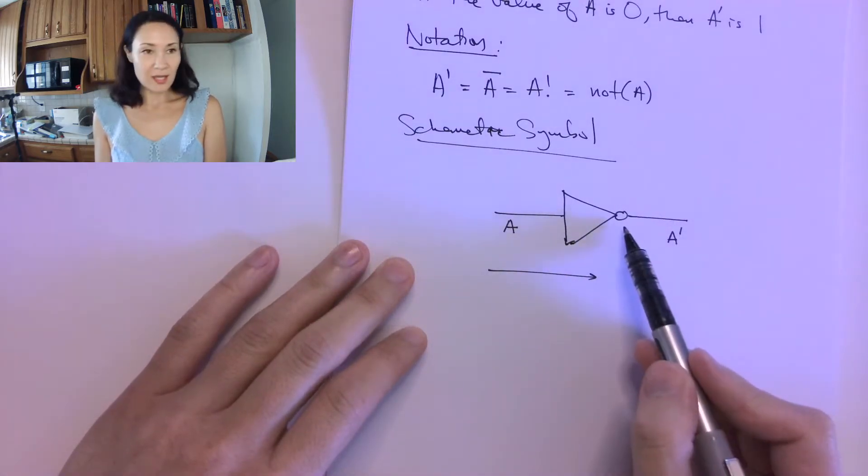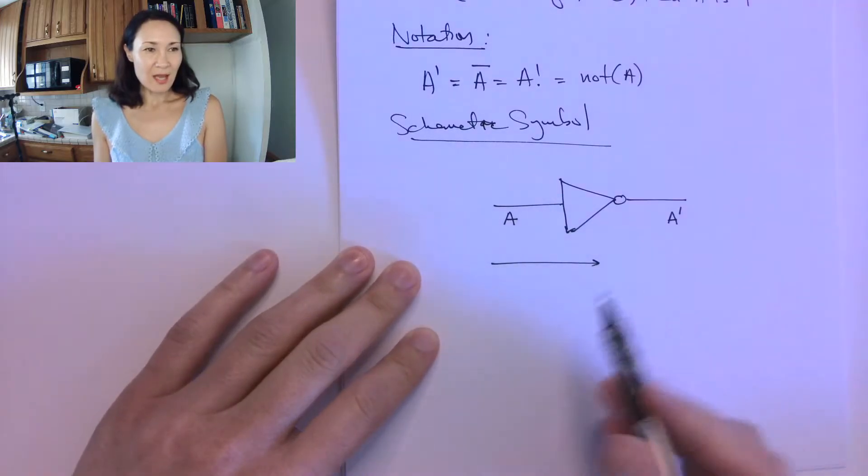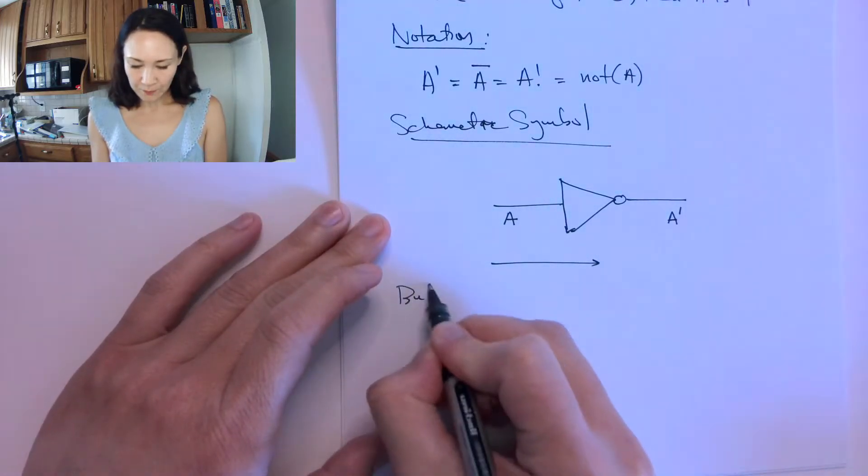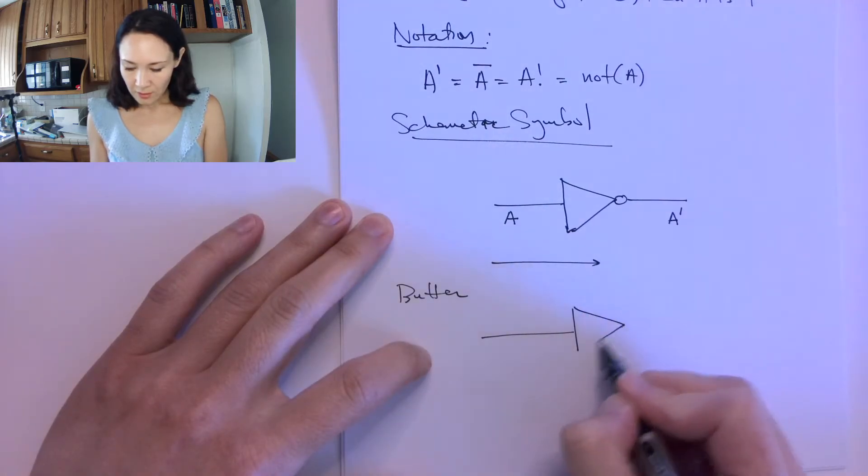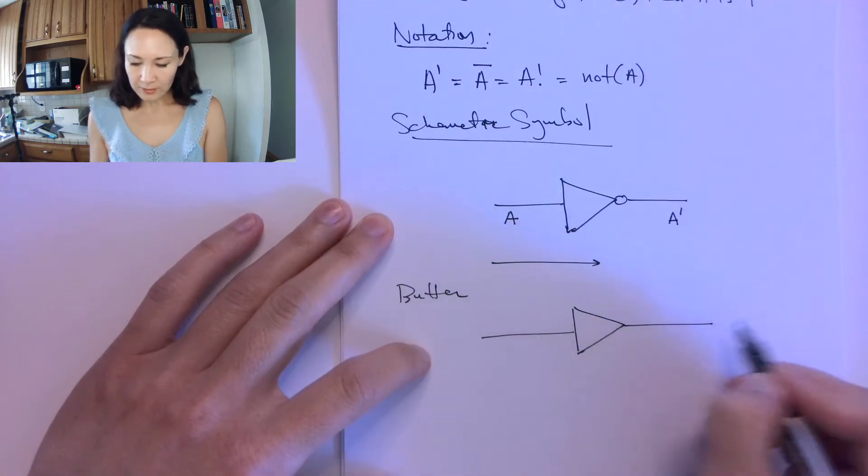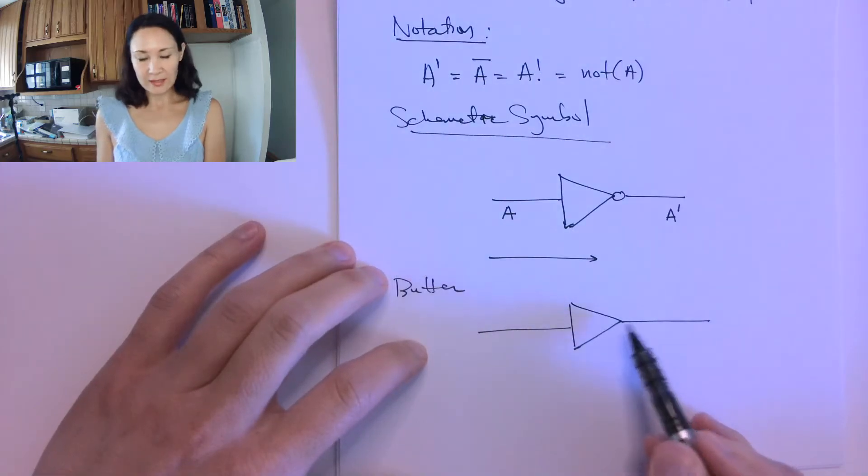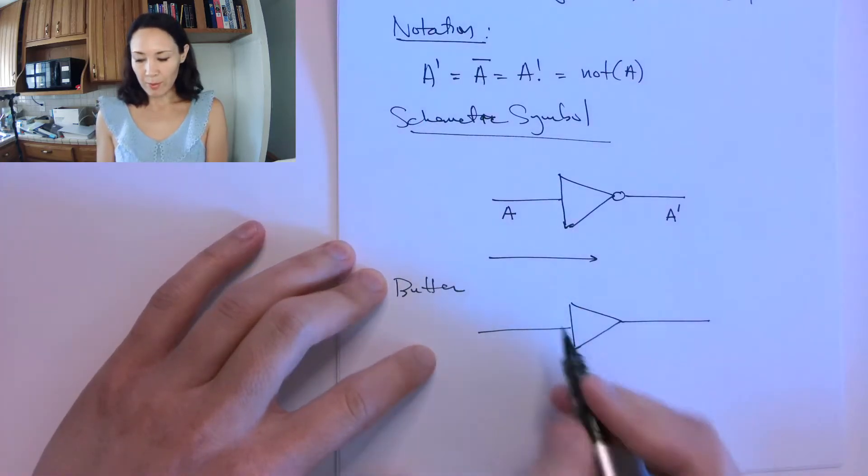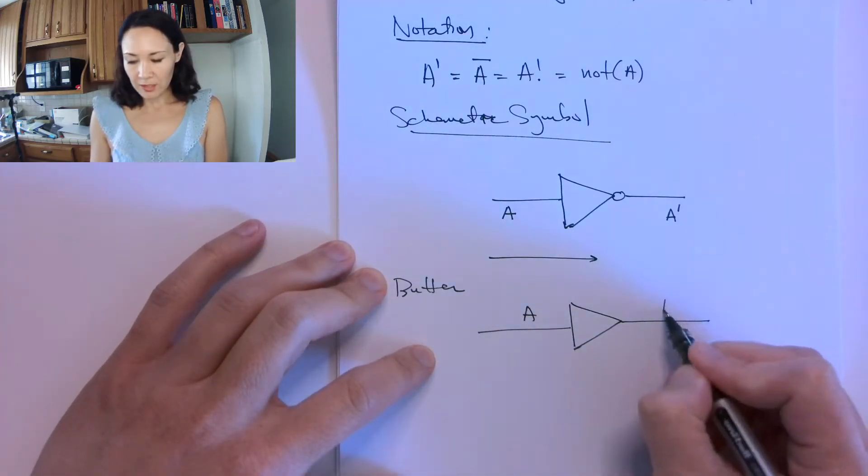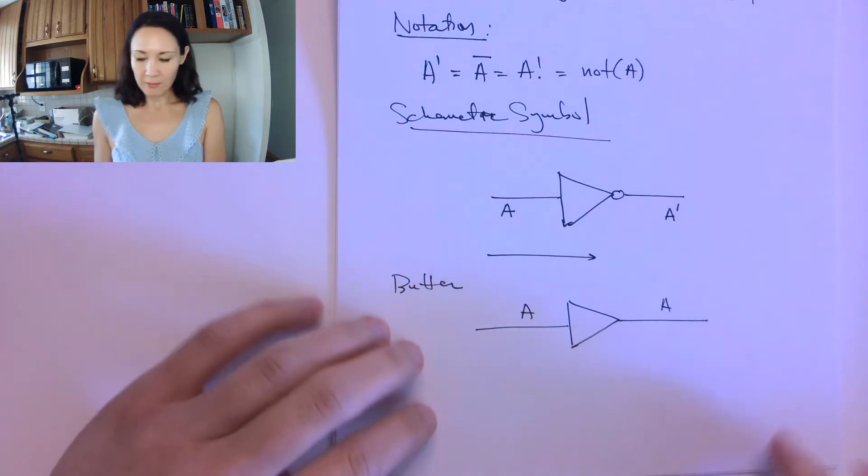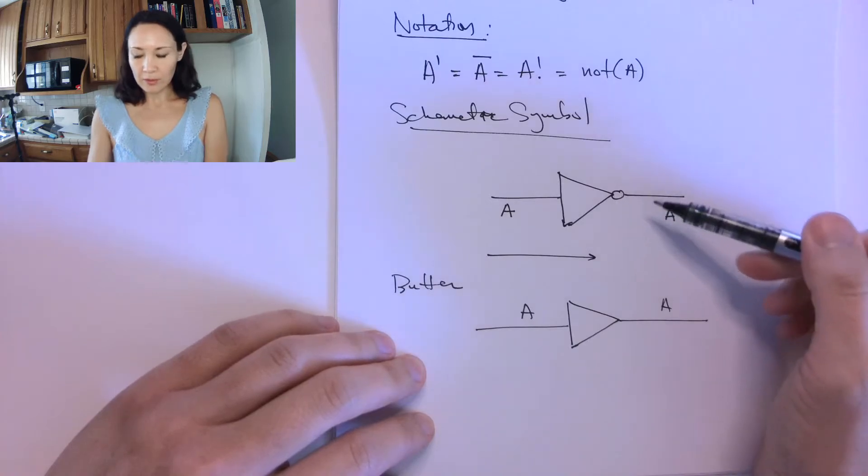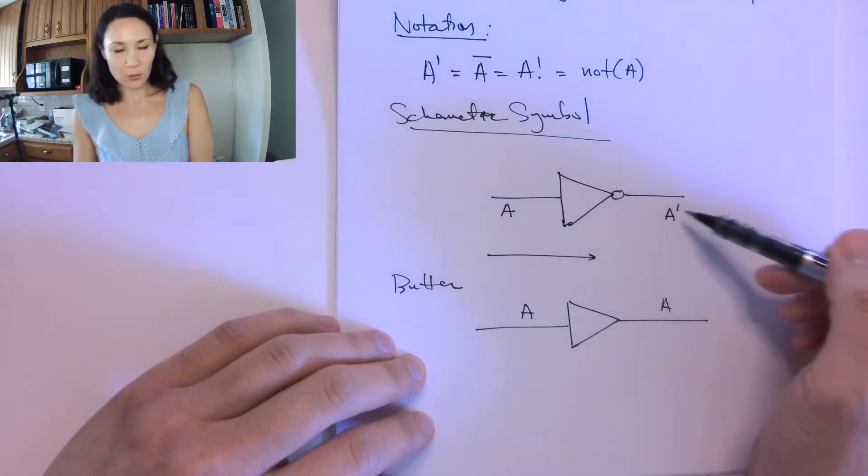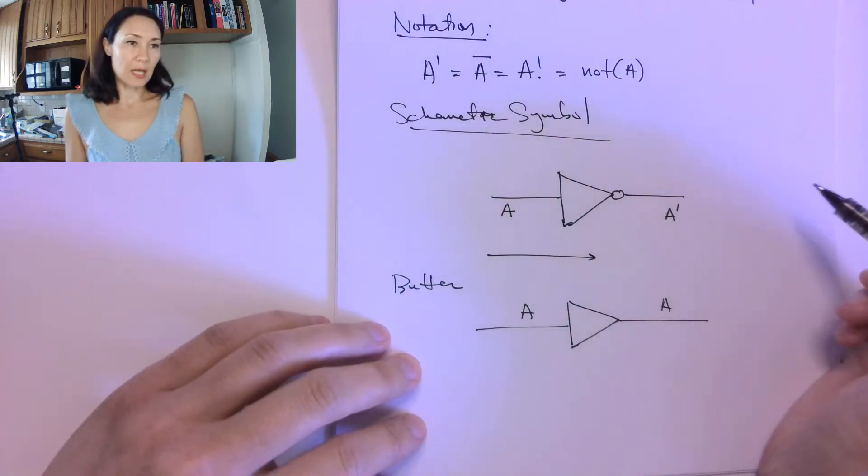So this symbol, the key thing here is this little bubble thing. Let me just show you, we'll also talk about buffers. So a buffer is basically the same thing as an inverter, but it doesn't have the bubble. So here, if we have A coming in, we just have plain A coming out. So here's the contrast. The inverter has this little bubble, and that indicates that we're actually going to be flipping the input bit.